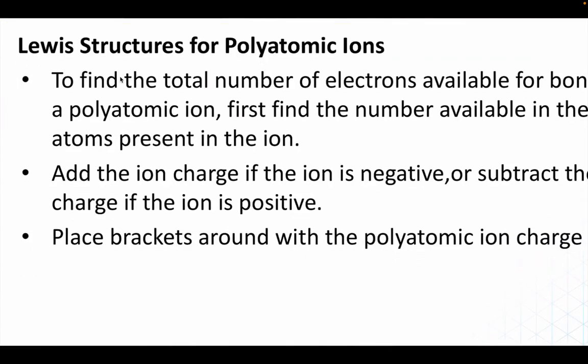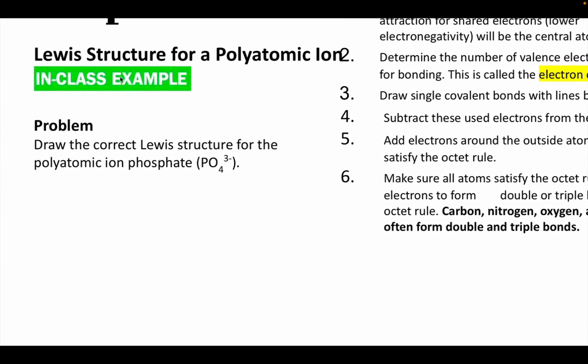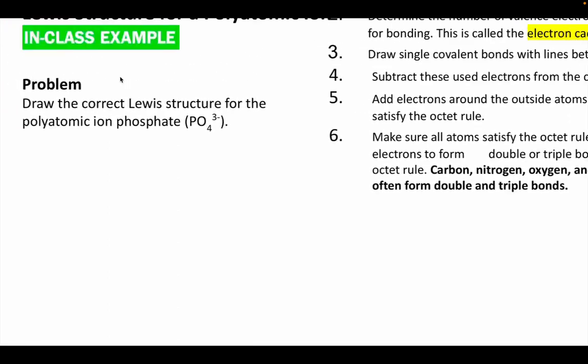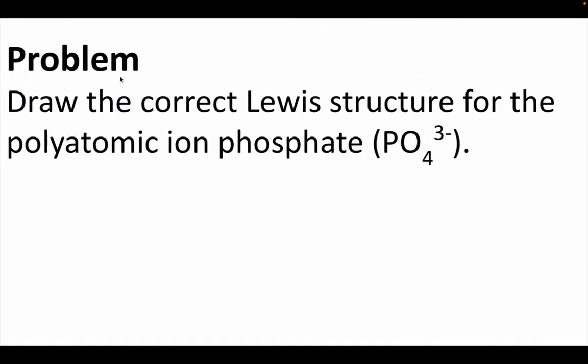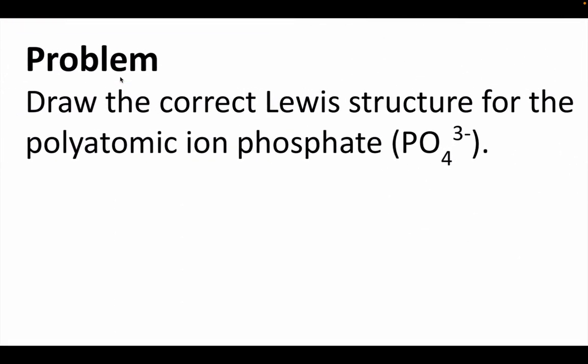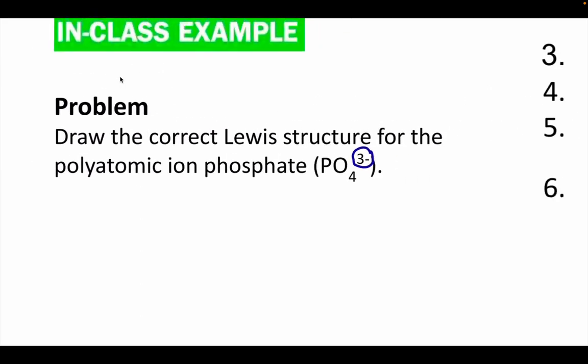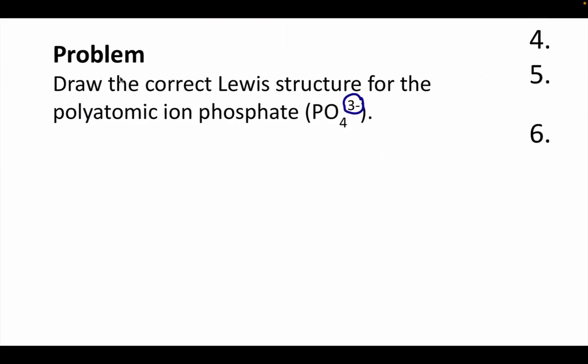Let me show you some other things. So polyatomic ions, it's elements that are bonded together, but overall they have a charge. So they're an ion, but they're bonded covalently. We still do all of the same process. There's only just two other things that you have to consider.